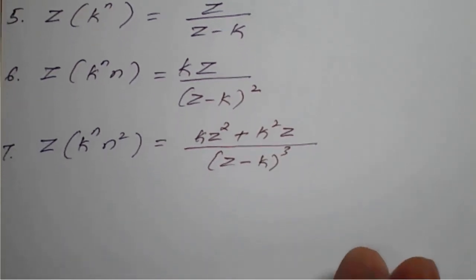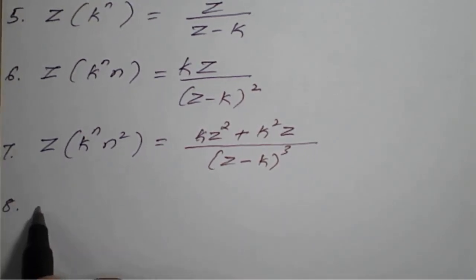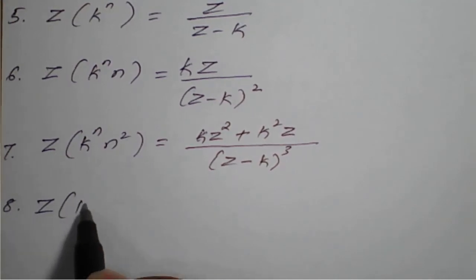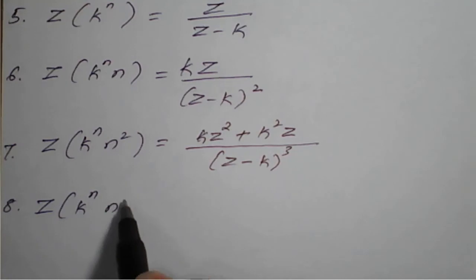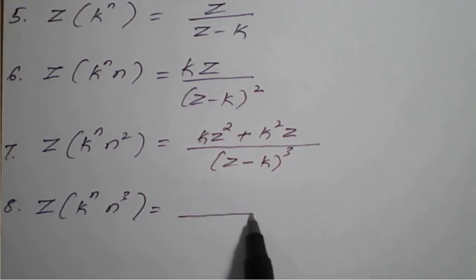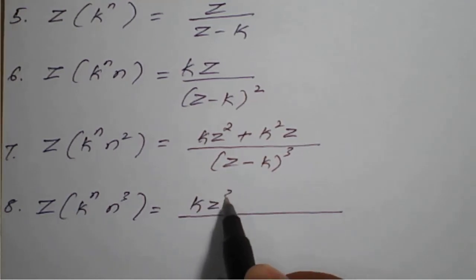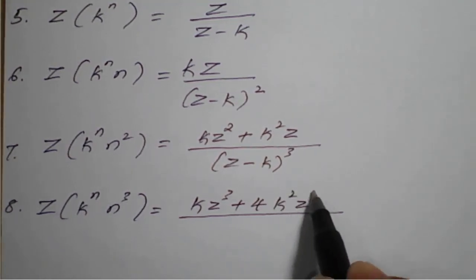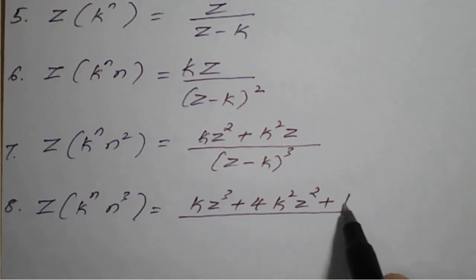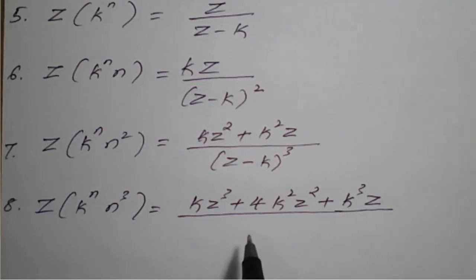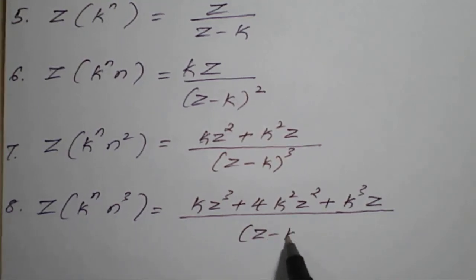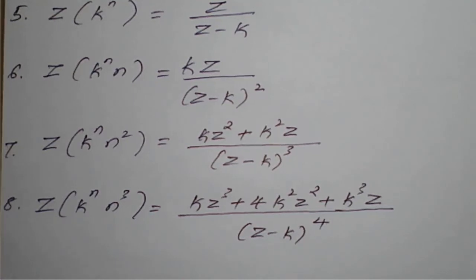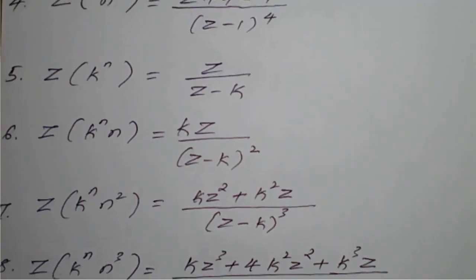Next: Z transform of K raised to n into n cube is equal to K cube Z plus 4K square Z squared plus K Z cubed, divided by (Z minus K) whole raised to 4. So these are the standard Z transforms, and using these we are going to prove all kinds of examples related to Z transforms.